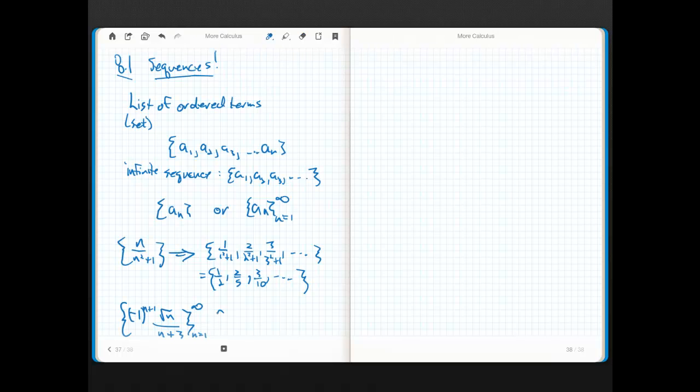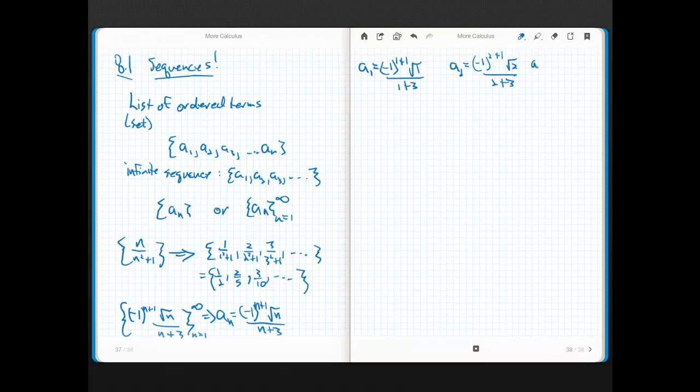If you think about it, what we have is a sub n. This implies that a sub n is really equal to negative 1 to the n plus 1 times root n over n plus 3. And then, all I do is plug and chug. You can look at a sub 1 equals negative 1 to the 1 plus 1 root 1 over 1 plus 3. I can fill them in one at a time. a sub 2 equals negative 1 to the 2 plus 1 root 2 over 2 plus 3, et cetera, et cetera.